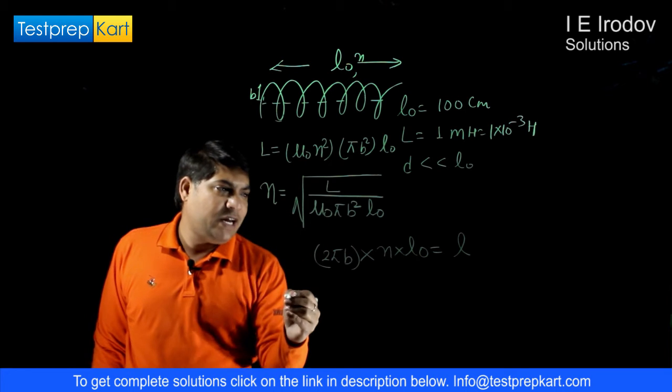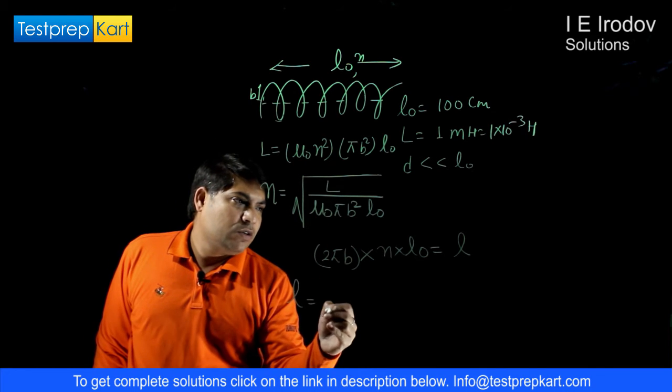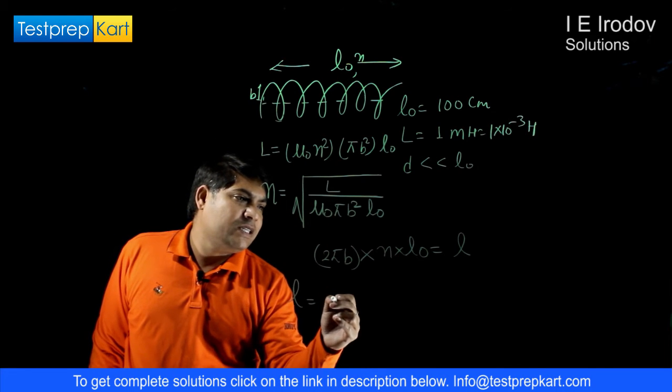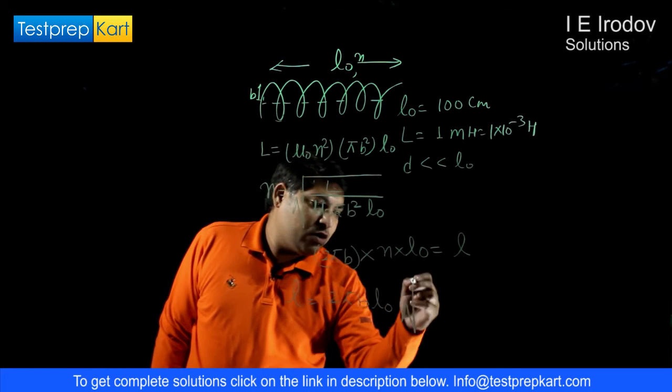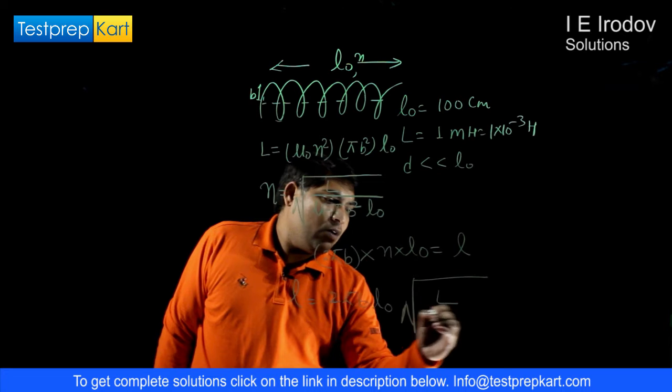Now from here we can substitute value of n in this expression. So total length of conductor is 2πB × L₀ × √(L/(μ₀πB²L₀)).